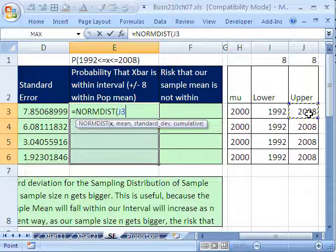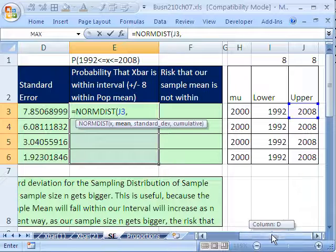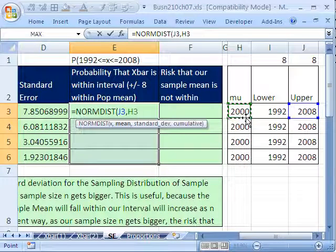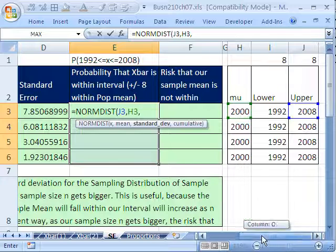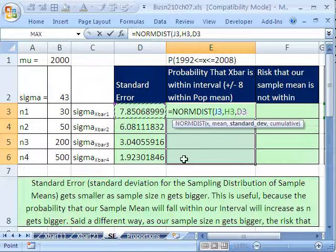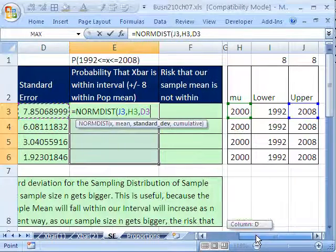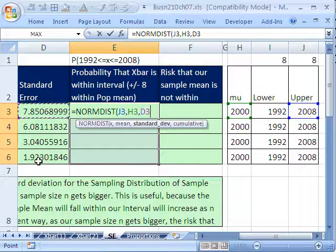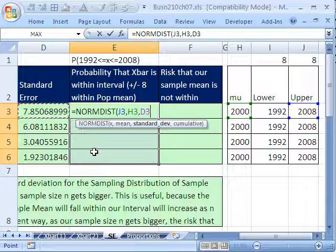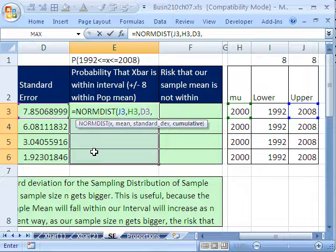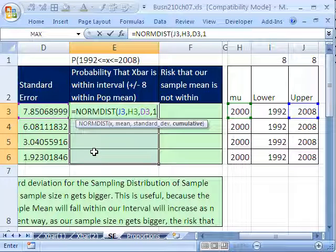We'll do our upper first, always the upper, minus our mean, which is over here. Oh, I got my mu right here. Comma, the standard deviation that is going to be. Oh, and that's there also. So as that standard deviation gets smaller, what's going to happen to the probability? We've got to go comma 1 because it's cumulative from the left.